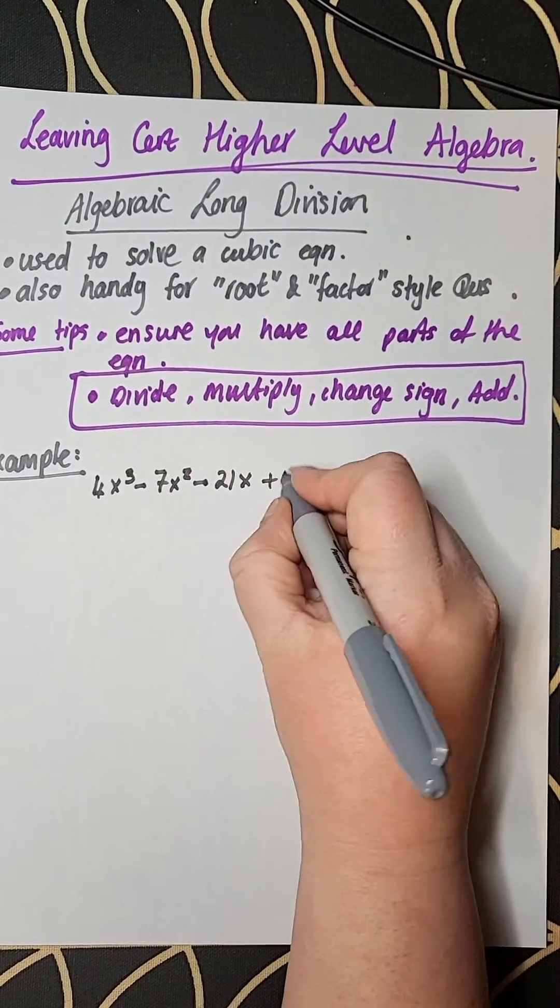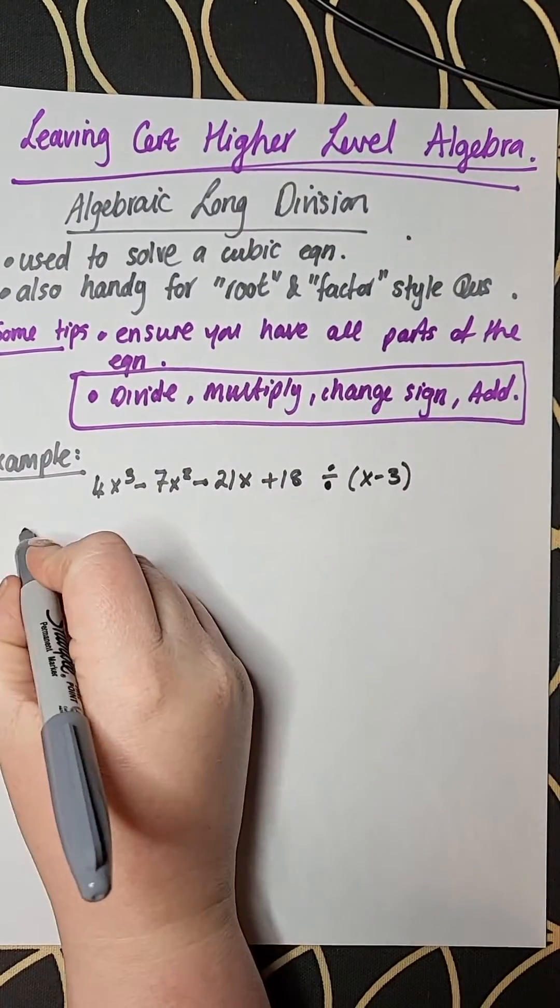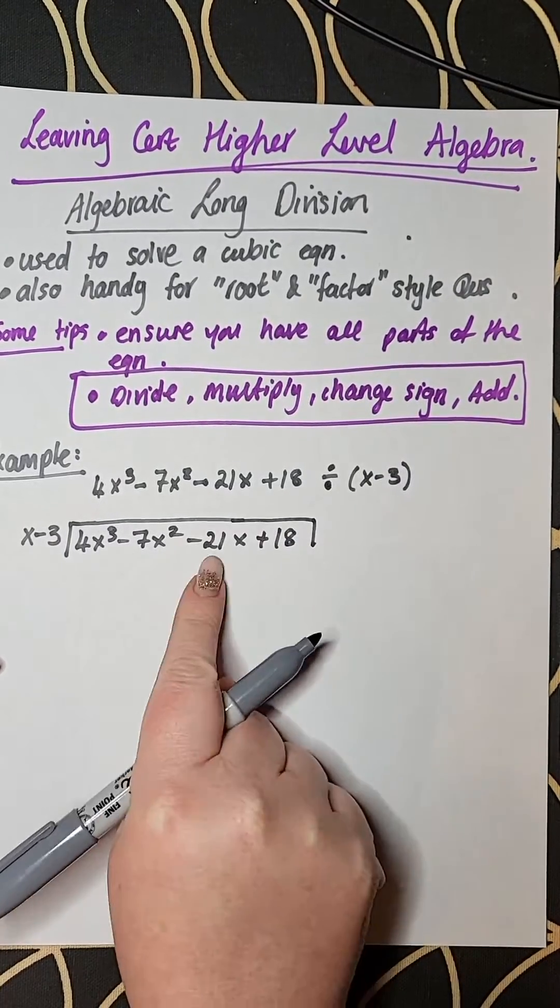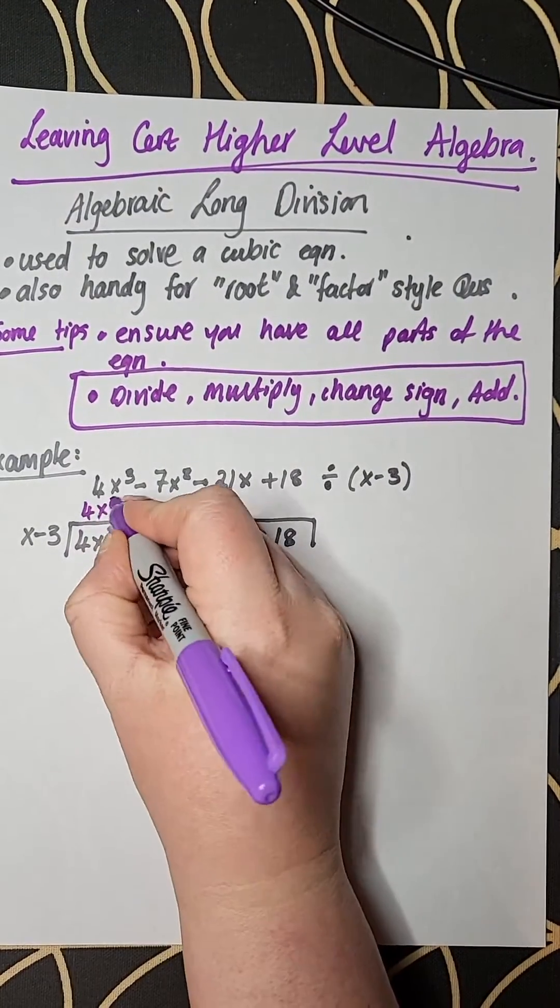Anyway, so you've got four steps to this process. You divide, multiply, change the sign and add, and you do that over and over and over again until you have run out of things to divide into.